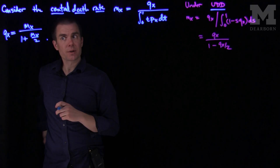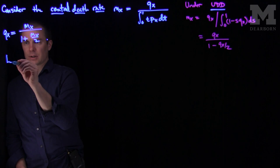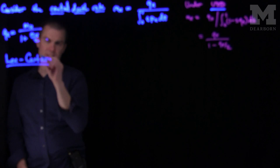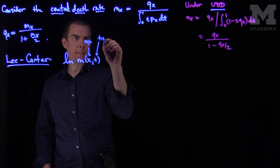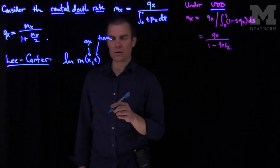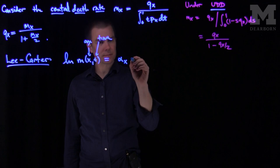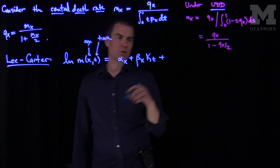So now what we want to do is consider the Lee-Carter model. This Lee-Carter model says that the natural log of this central death function m for age x at time t—so this is my age and this is my time—the natural log of this central death rate as a function of age and time is equal to alpha x plus beta x kt plus a residual error depending on x and t.